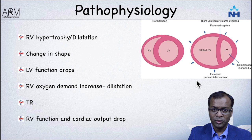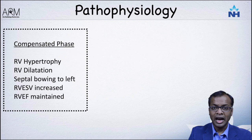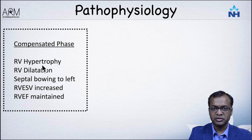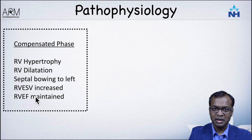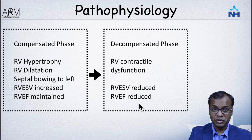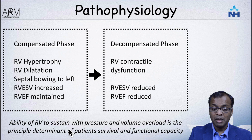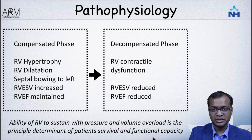So why do we need to know all this? When we look at a patient with pulmonary hypertension, the RV can remain in a compensated phase — RV hypertrophy and dilatation with septal bowing to the left, but right ventricular ejection fraction is maintained. If this continues and RV function drops or RV volume starts to drop, that leads to a decompensated phase where patients really do not do well. The ability of the RV to sustain pressure and volume overload is the single parameter that predicts survival and functional capacity.